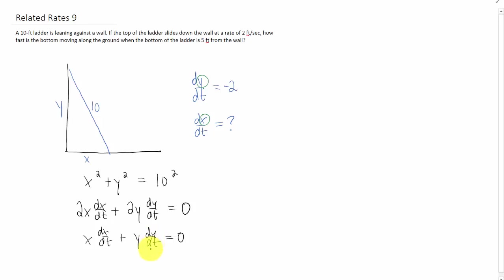dy/dt is given. I don't think we have y yet. dx/dt is what we're trying to find. And x, they actually give us at this moment that we're trying to relate these two rates. The bottom of the ladder is 5 feet from the wall. That means x equals 5.